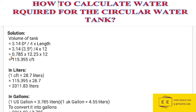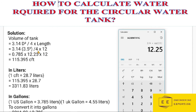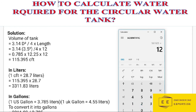Calculating this gives us a volume of 115.395 cubic feet. Let me calculate it on the calculator. We have 3.14 × 3.5, giving 12.38 — then 12.38 × 3.5 = 43.365, divide by 4, then multiply by 12, the depth of the circular tank, to get 115.395 cubic feet.